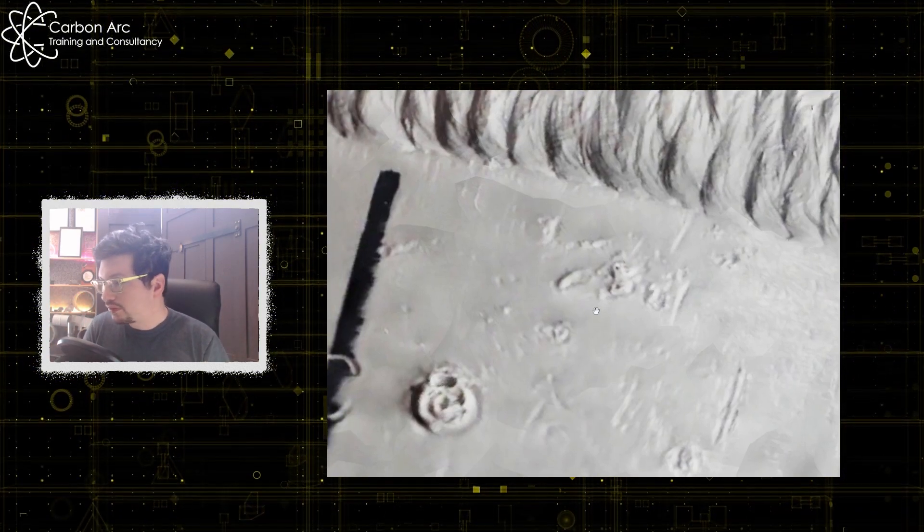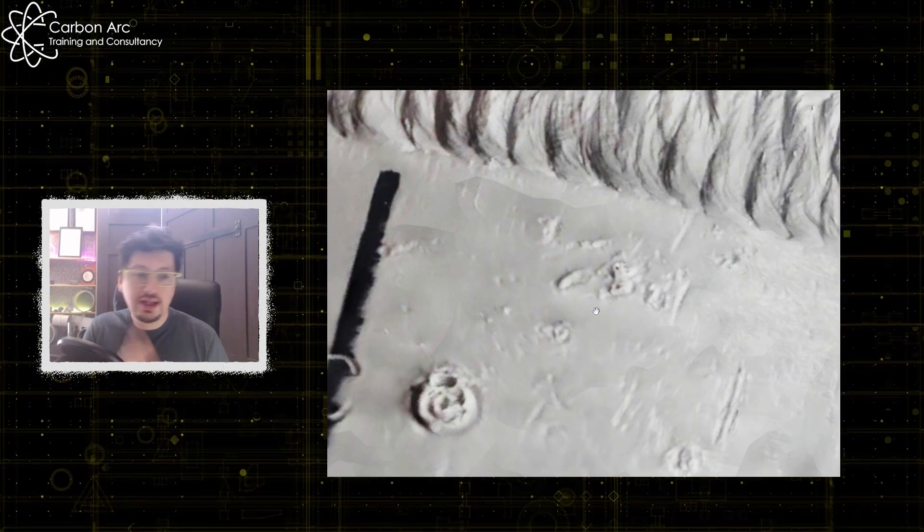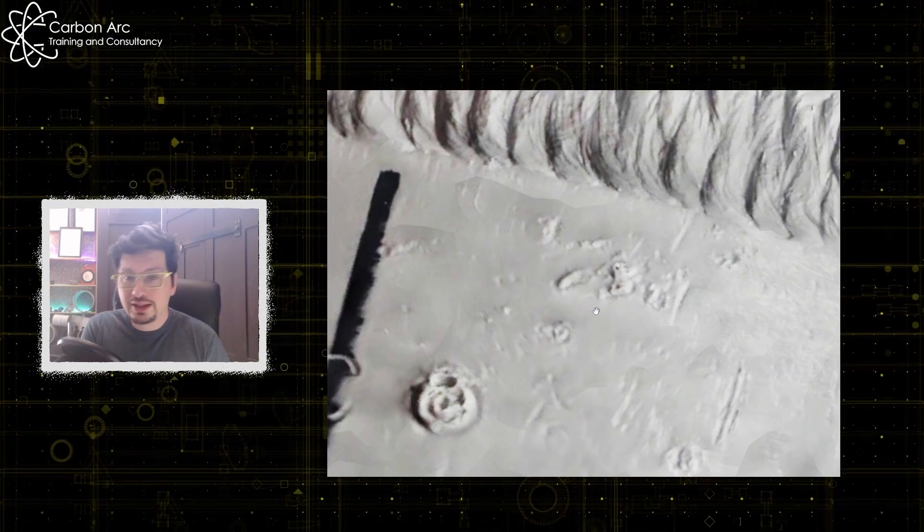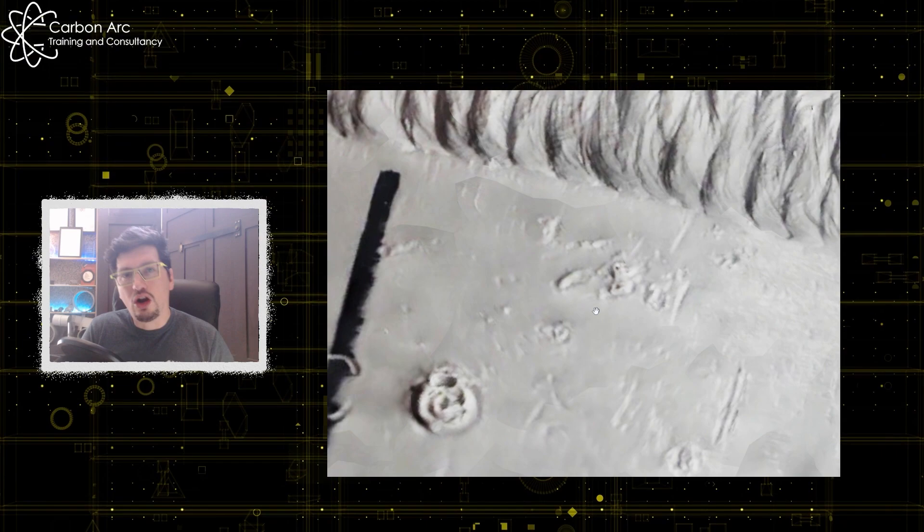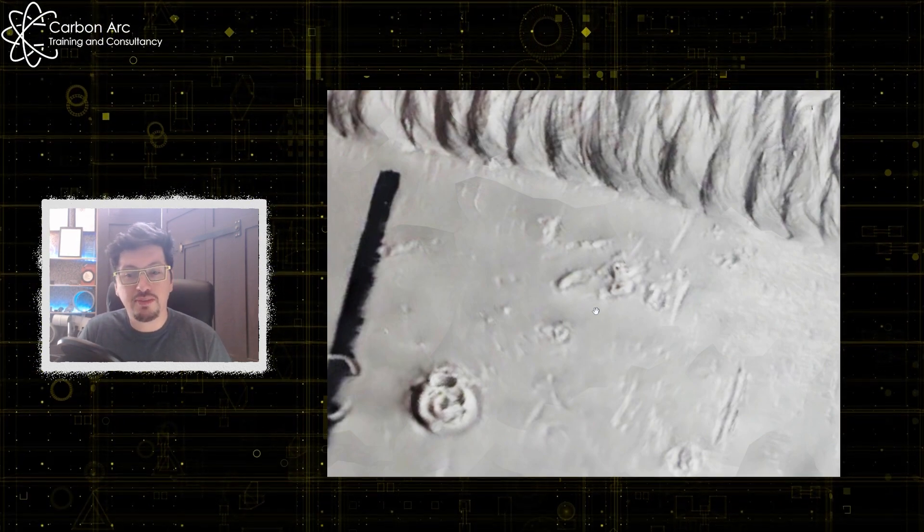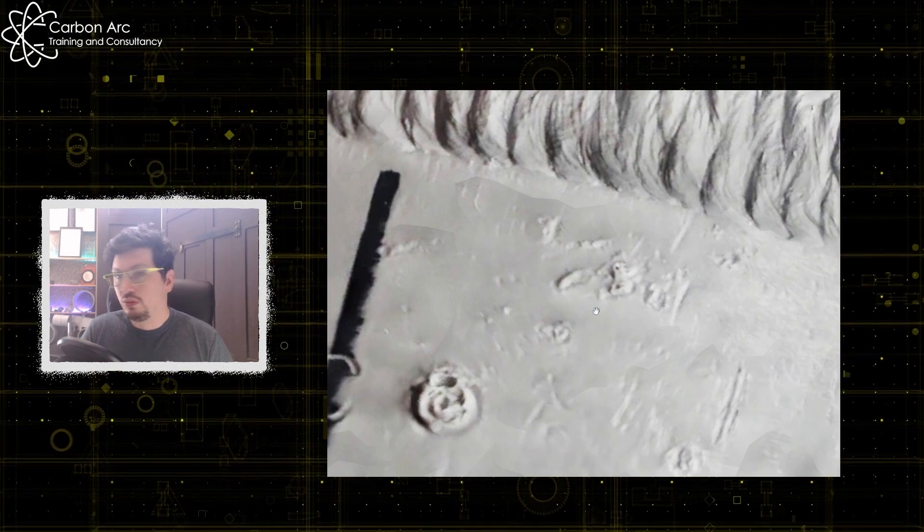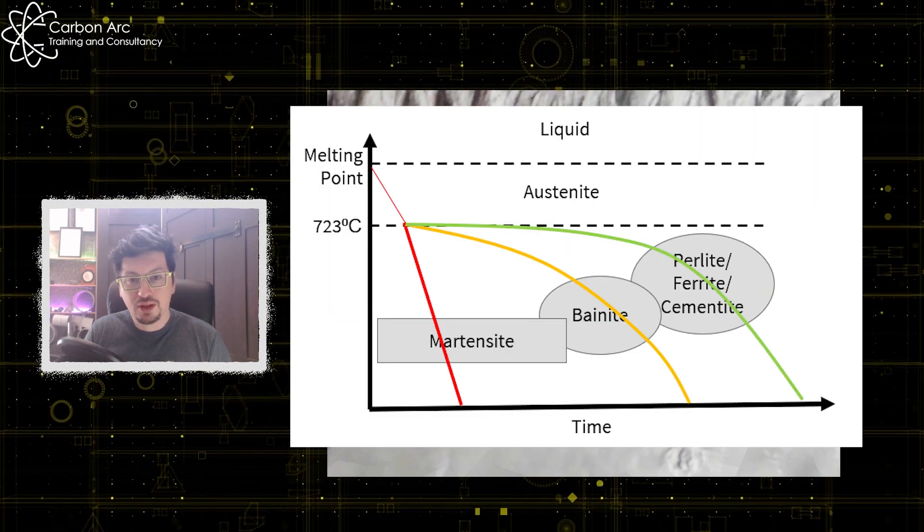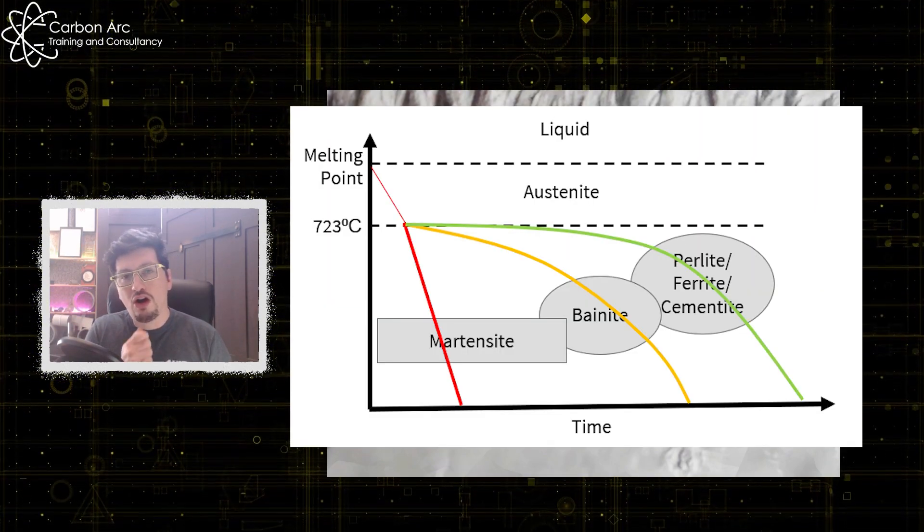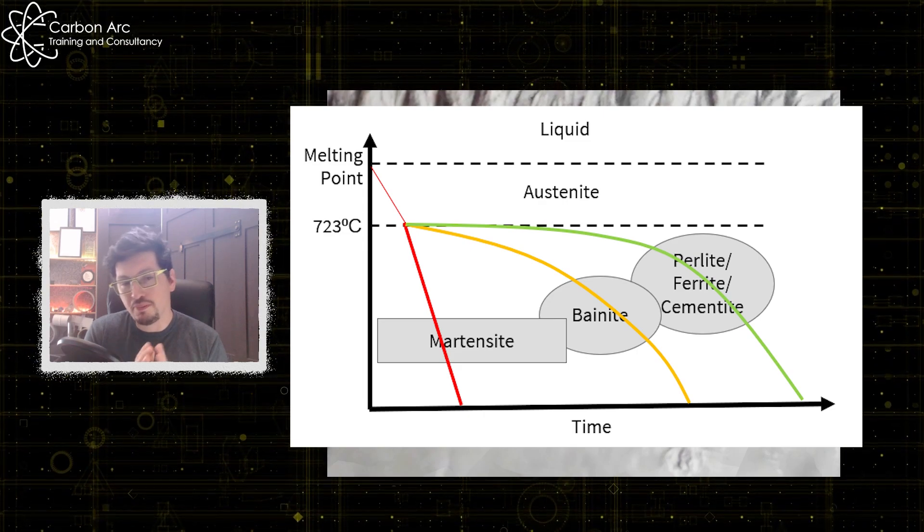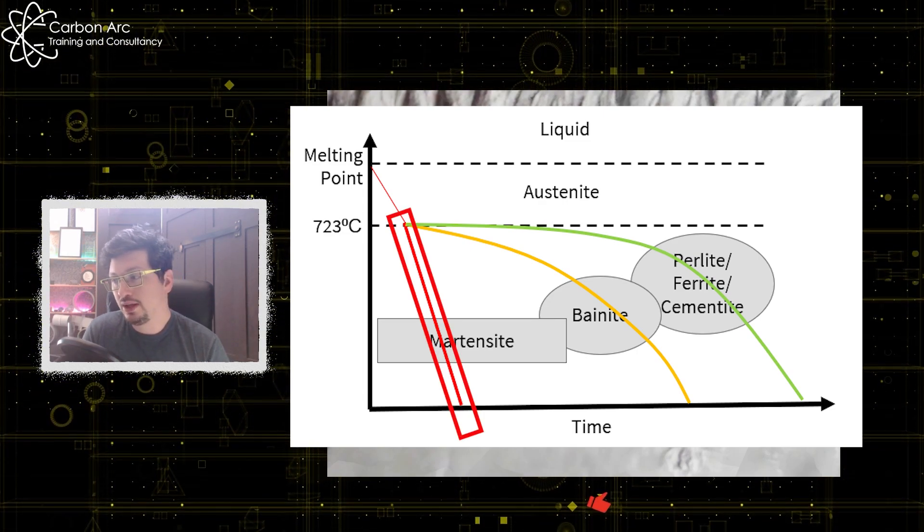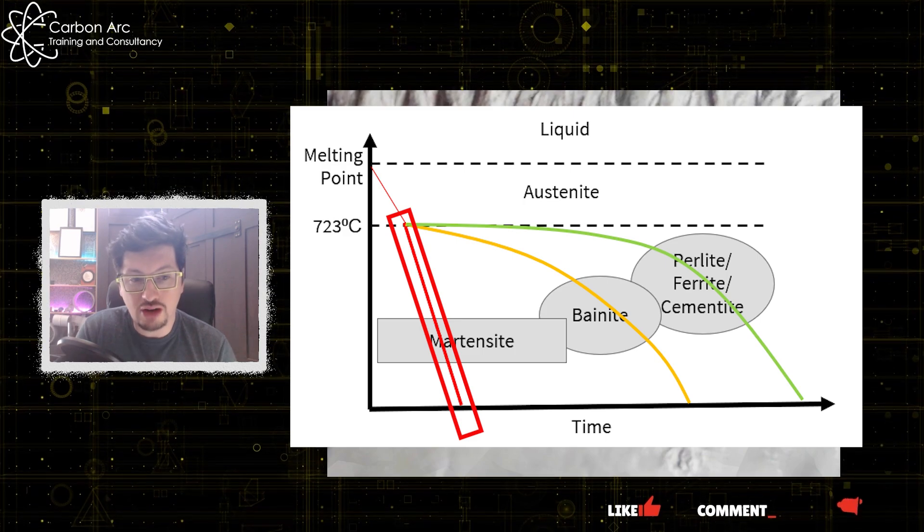So if we've got a fast heating and cooling rate, we know when we're coming molten and we're cooling very quickly, our time temperature transformation graphs capture this very well. And if we drop one up here, we can see that our cooling rate is going to be on that martensitic band coming down and therefore is likely to crack.